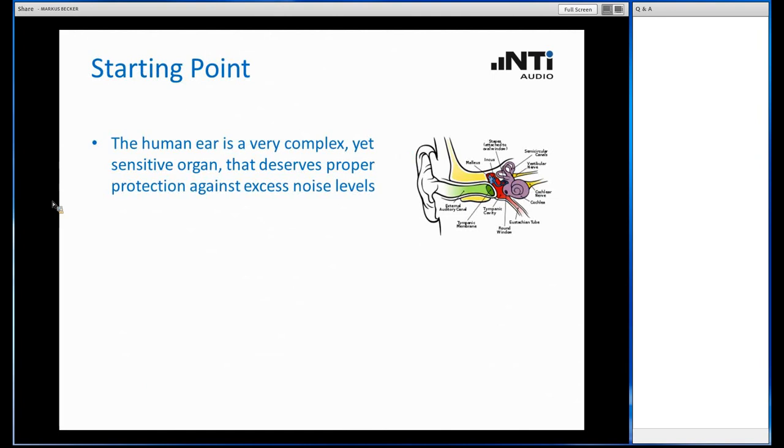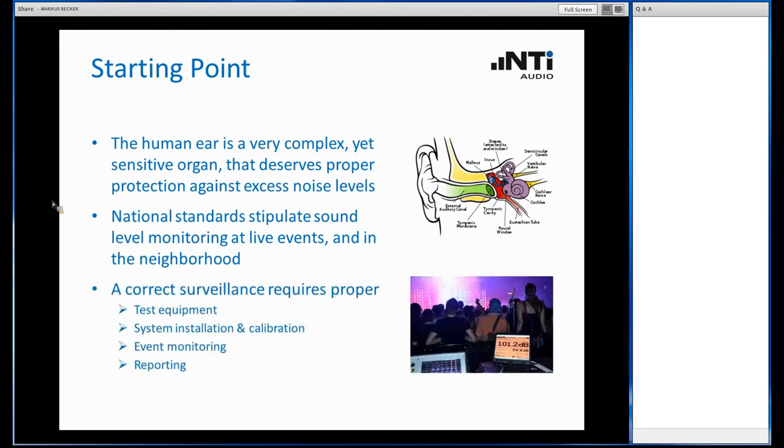Why are we interested at all in Live Event Monitoring? The key aspect is that our ear is a highly sensitive, delicate organ that deserves proper protection against excess noise levels. This is represented in various national laws that clearly stipulate sound level monitoring at live events, like concerts, and in the neighborhood to protect people from excess noise levels. As we are responsible for this task, we want to do our job right, meaning we want to use correct test equipment, set up this system professionally and calibrate it correctly, take care accurately of event monitoring, and in the end have a report as proof of the good job we did.